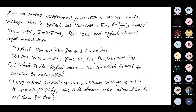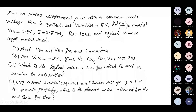VDD and VSS are 5 volts. KN dash W by L is 5 milliamps per volt squared. VTN, the threshold voltage, is 0.8 volt. IE, the bias current, is 0.5 milliamps. RD is 10 kilo ohms. Neglect channel length modulation.